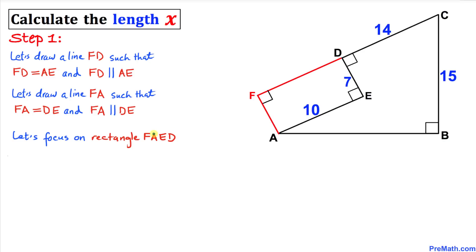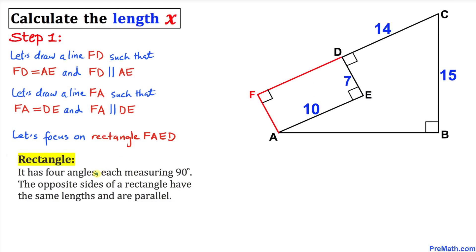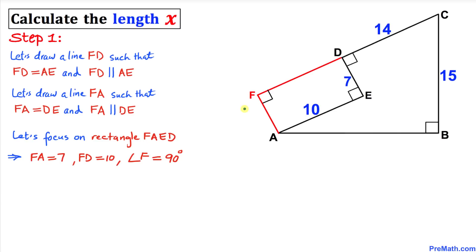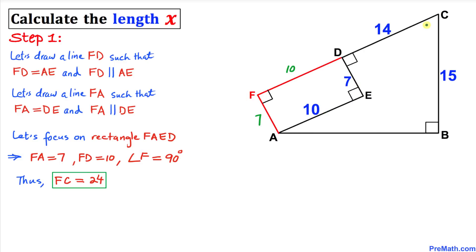Now let's focus on this rectangle FAED. Here is the definition of a rectangle: it has 4 angles each measuring 90 degrees, and the opposite sides have the same length and are parallel. Therefore we conclude that FA is going to be 7 units, FD is going to be 10 units, and moreover this angle F is going to be 90 degrees. So this total length FC is going to be 10 plus 14, which is 24.